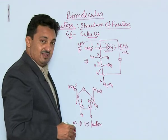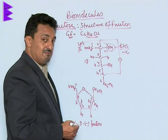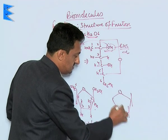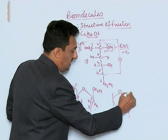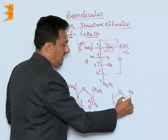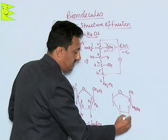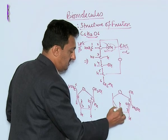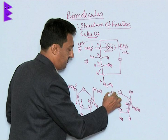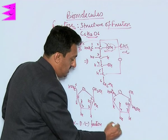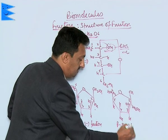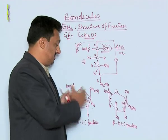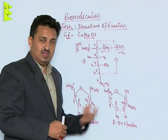For beta D-minus fructose, the OH of the second carbon goes upward and CH2OH is down. Carbon 3 has OH, carbon 4 has OH downward, and carbon 5 has H with CH2OH on carbon 6. This is beta D-minus fructose. So these are the two anomeric forms — alpha and beta — of the fructose molecule.